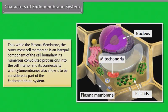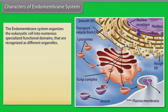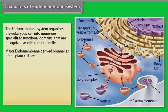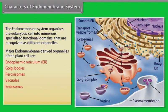While the plasma membrane, the outermost cell membrane, is an integral component of the cell boundary, its numerous convoluted protrusions into the cell interior and its connectivity with the cytomembranes also allow it to be considered a part of the endomembrane system. The endomembrane system organizes the eukaryotic cell into numerous specialized functional domains recognized as different organelles. Major endomembrane-derived organelles of the plant cell are endoplasmic reticulum, Golgi bodies, peroxisomes, vacuoles, endosomes, autophagosomes, and outer nuclear envelope.